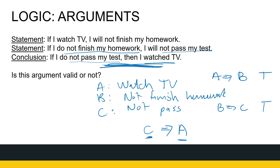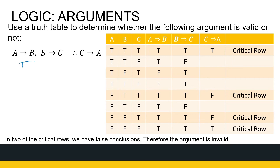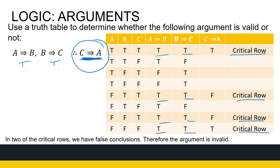Let's see mathematically whether this argument is valid, because we want to prove it mathematically rather than relying on the scenario. A implies B is true, B implies C is true — we're going to check C implies A. Following the same process with a truth table, we look at where A implies B and B implies C are both true — those are my critical rows. Now I look at the truth value of C implies A in those critical rows. First: true implies true is true. Next: true implies false is false. So there's at least one scenario where my conclusion is false even though my hypothesis is true — so my argument is invalid.